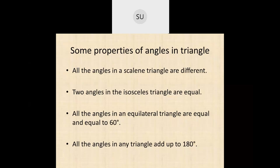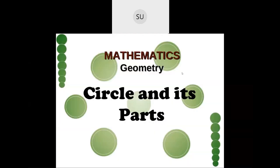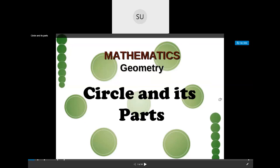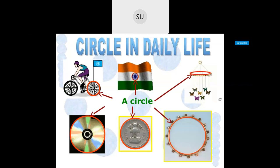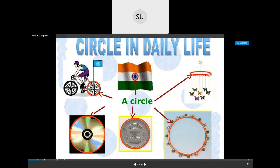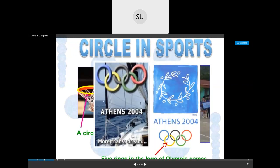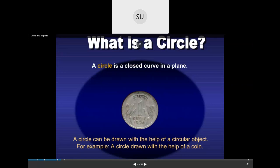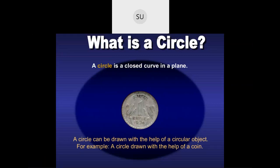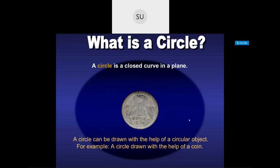Now we will see circles and its different parts. We see circles in daily life — wheels of cycles and bikes, the Ashoka Chakra, CDs, coins, drums and tablas, basketball hoops, and the five Olympic rings. A circle is a closed curve in a plane with only one curved surface — no straight lines.